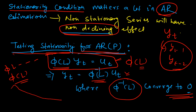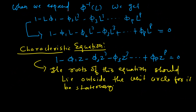This stationarity condition may seem complicated, but it will be easier when we take an example. In the next video, I will take a couple of AR models and show how we can test whether a particular AR model is stationary or not. We will use a methodology known as the characteristic equation for this purpose. When we expand this inverse term, we get 1 minus the lag operator times the estimate, and higher lags continue up to P — considering an AR(P) model with P lags.